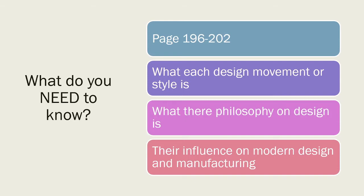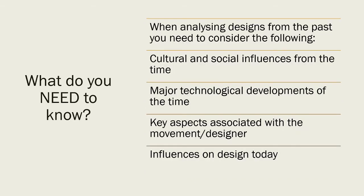We'll also look at their influence on modern design and manufacture. Some of them are still very much making a comeback — the idea with design is that things go in circles. Things are popular for a certain amount of time, then they fade out as new styles come in, and then things like vintage and retro come back around again. This is pages 196 to 202 in the textbook. As we go through, you need to start forming your own opinions on design movements and how they relate to your own preferences.